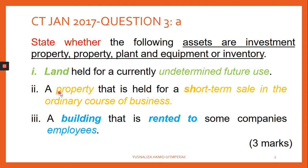You need to decide whether it is IP, PPE, or equipment. This one is likely going to be an IP because 'undetermined future use' is one of the examples under land held for capital appreciation. For IP, it is either land or a building, or parts of a building, or both land and building, held by the company for rental or for capital appreciation or both. Undetermined future use falls under capital appreciation.